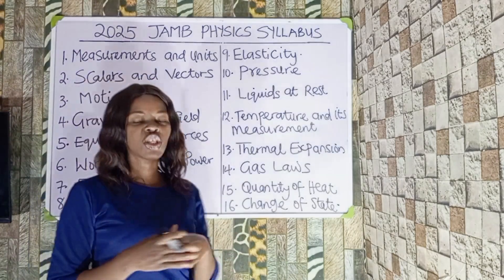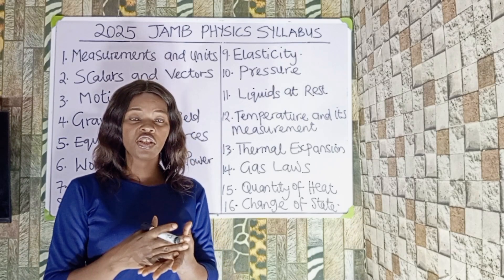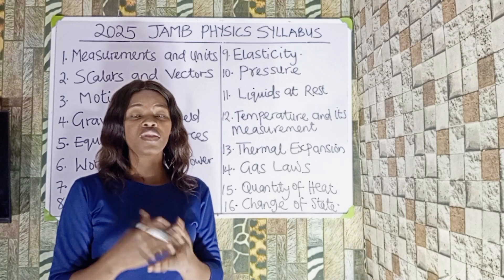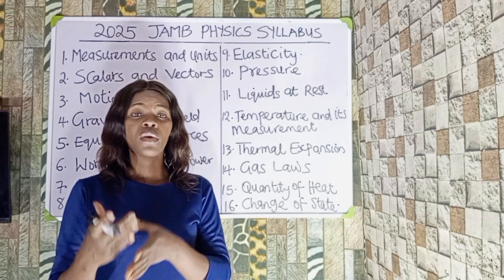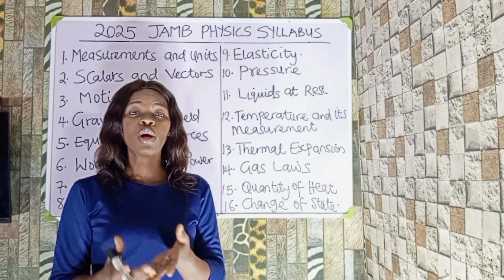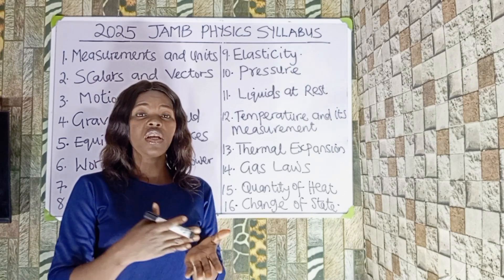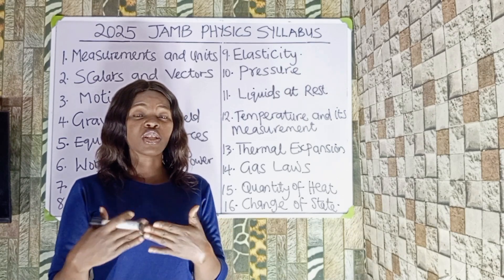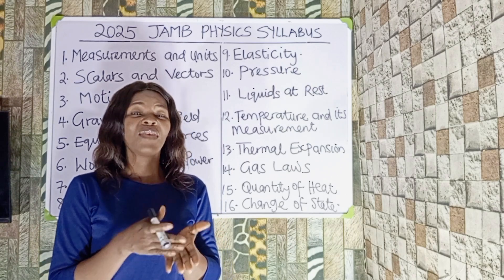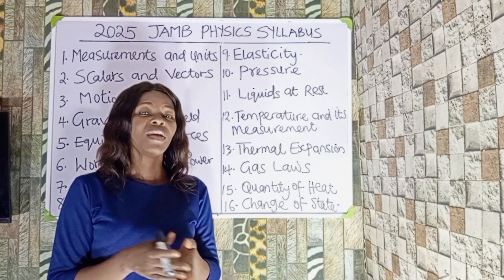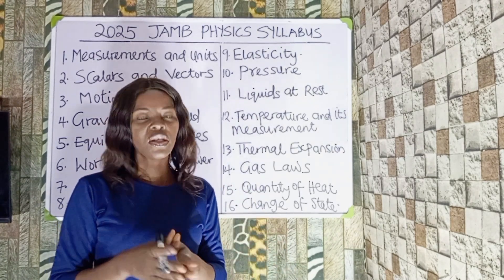The next topic is change of state. You should know that a substance can change from liquid state to gaseous state, and from solid state to liquid state. It can also change state with no change in temperature — in that case we look at latent heat. If you have the latent heat of fusion and the latent heat of vaporization, those are all enclosed under change of state.